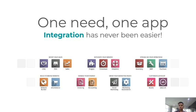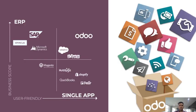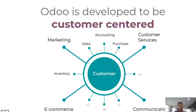Let me tell you about competition in the market and where we stand. In terms of business scope and user-friendliness, Odoo is at the top on both things. Some companies focus only on business scope and some only on user-friendly applications. Odoo focuses on both, which is why we have been providing quality products for the last 17 years. Everything is in-house, covering marketing, sales, accounting, purchase, customer service, inventory, and e-commerce.